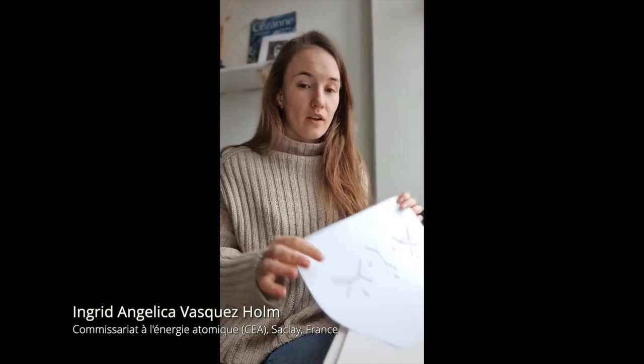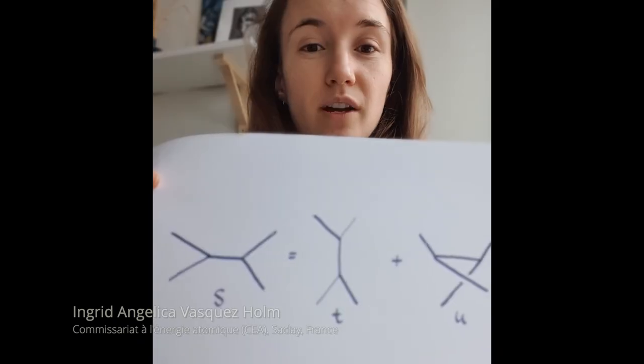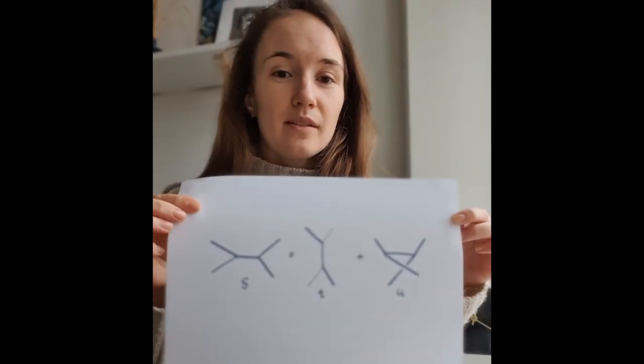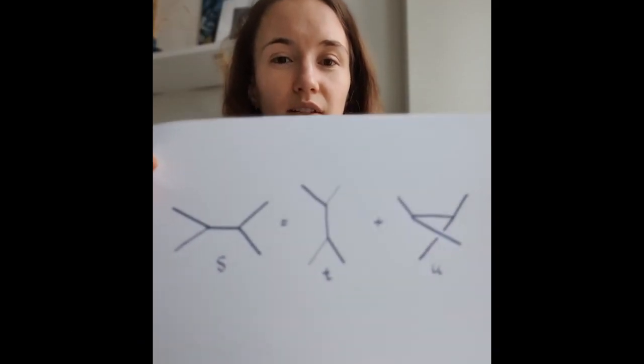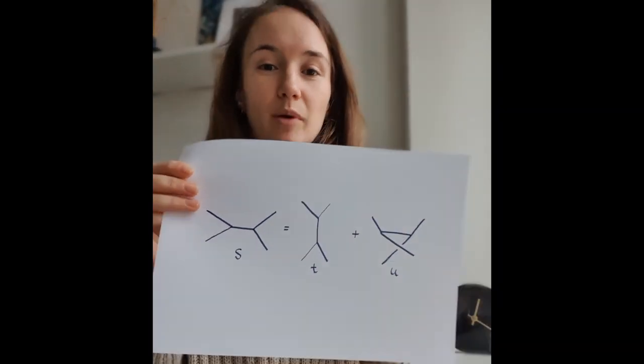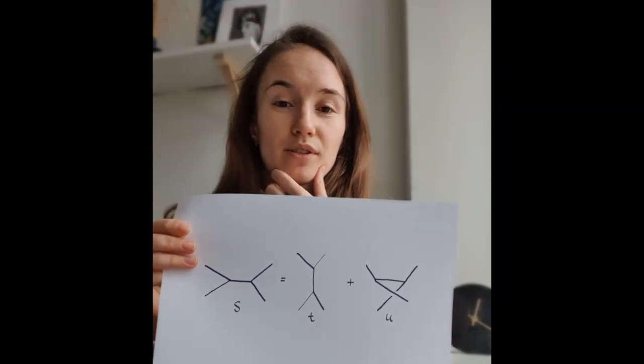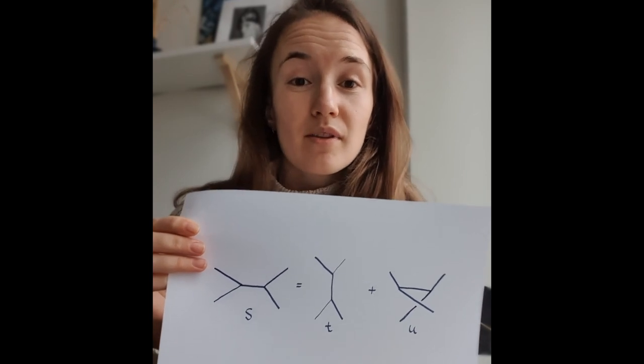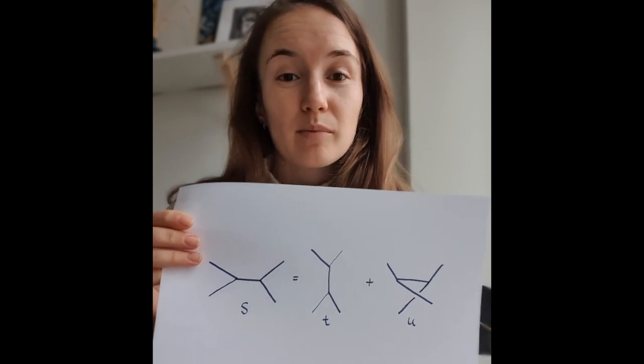In some sense, gravity theories is a double copy of the corresponding non-abelian gauge theory. The study of radiation in a binary system of two celestial objects. I work on something called the duality between color and kinematics. We can relate the color factors of these graphs in this simple way. This means that instead of having three independent graphs, we actually have two independent color factors. Now, it turns out that we can actually do the same thing for the kinematic part of an amplitude.